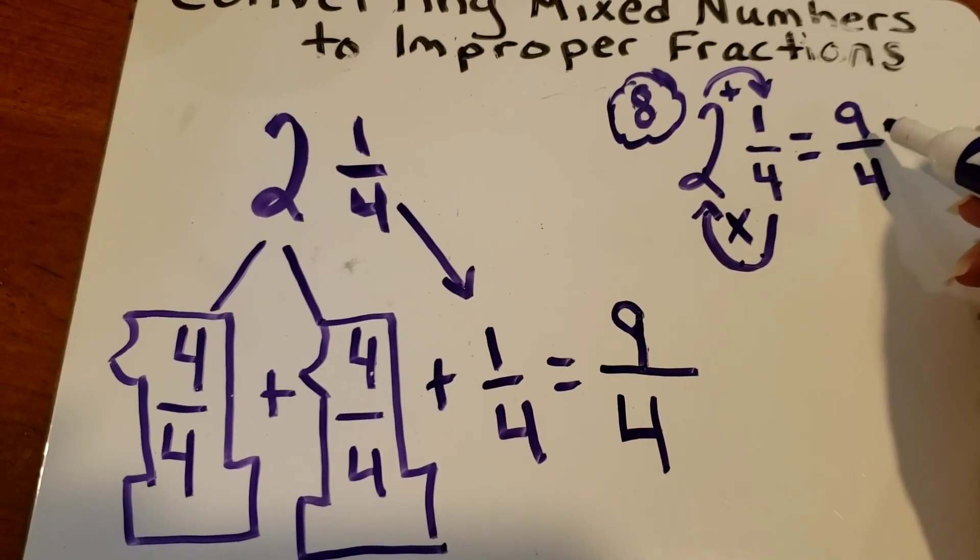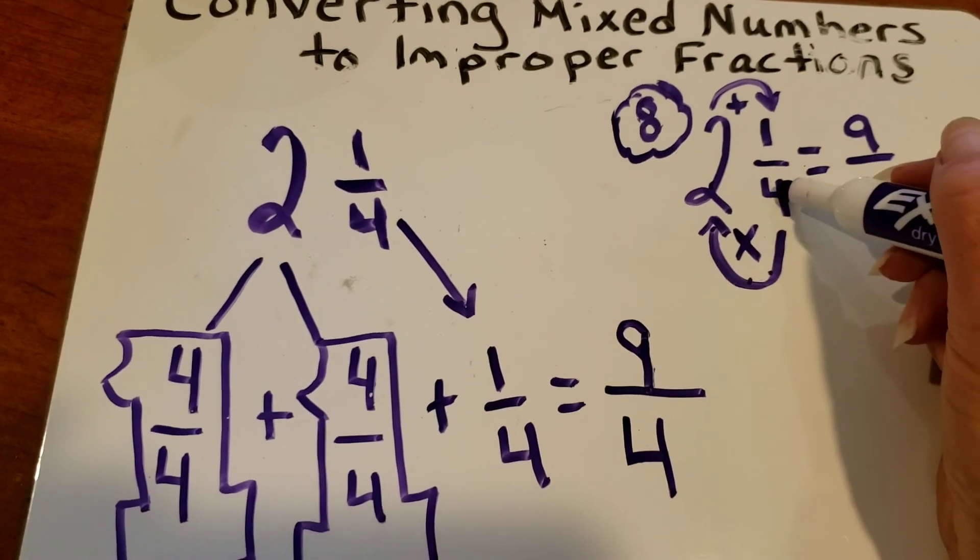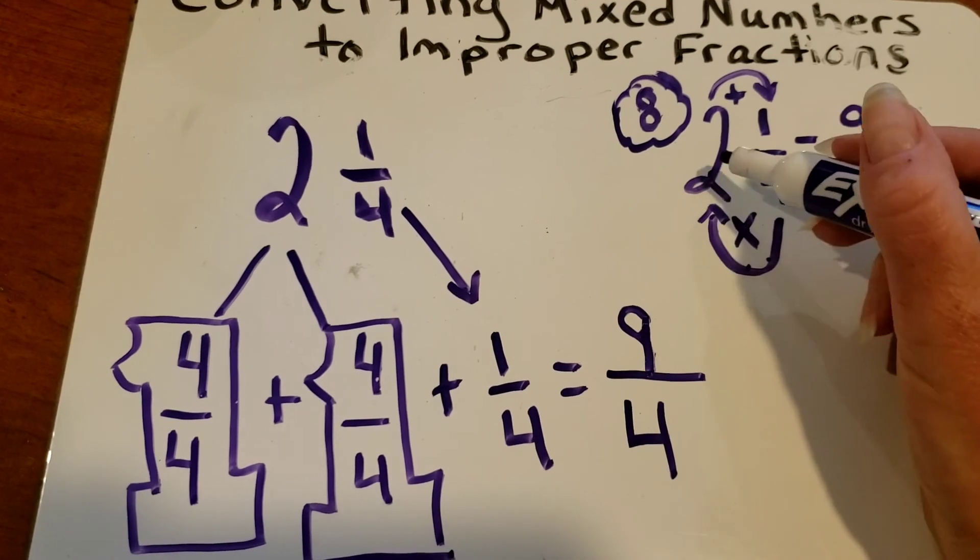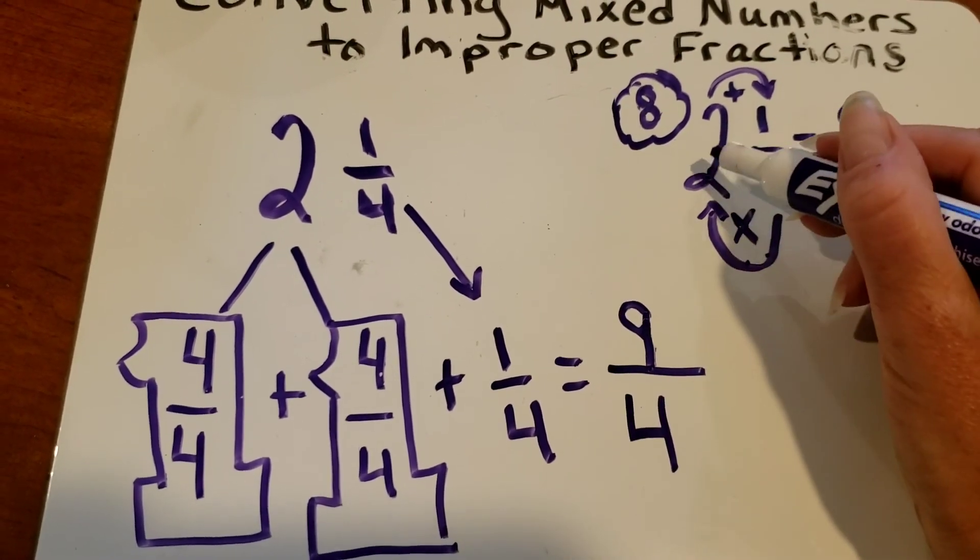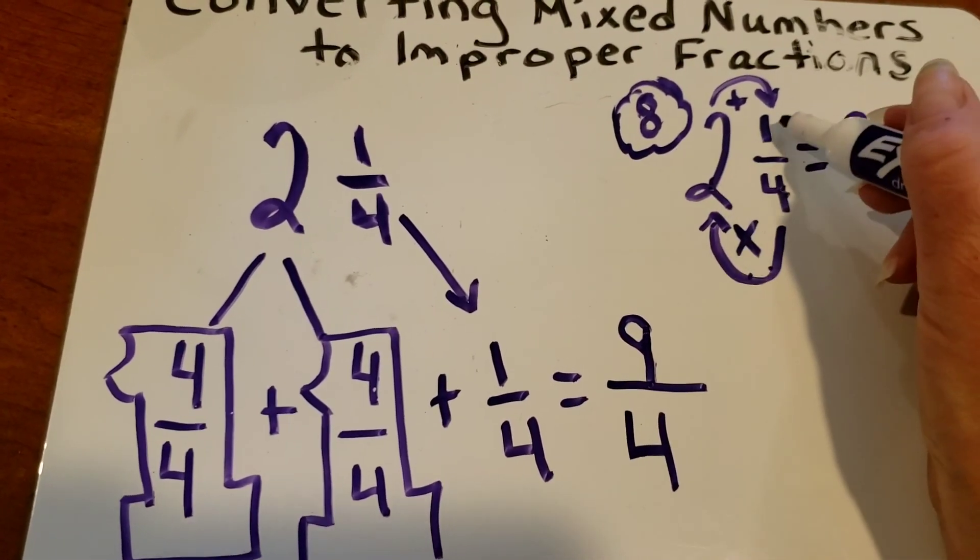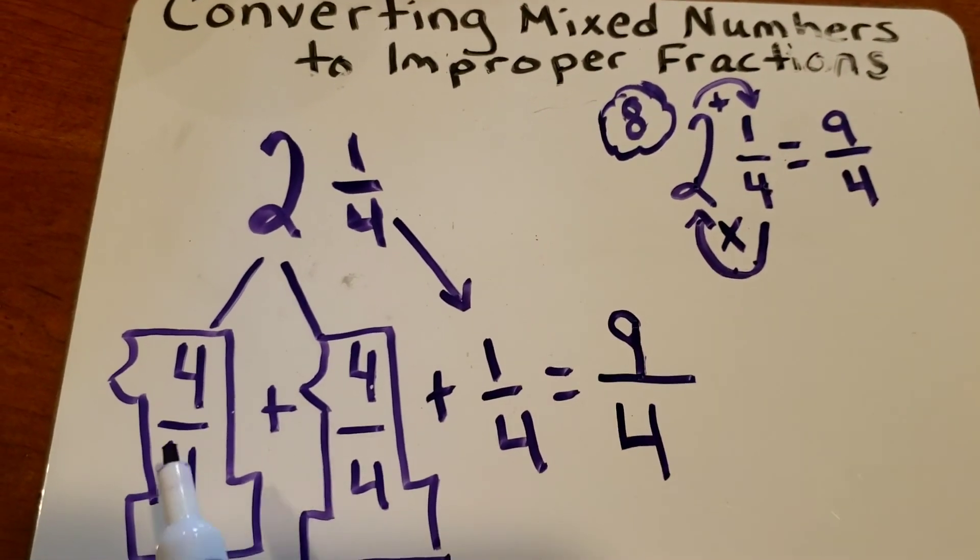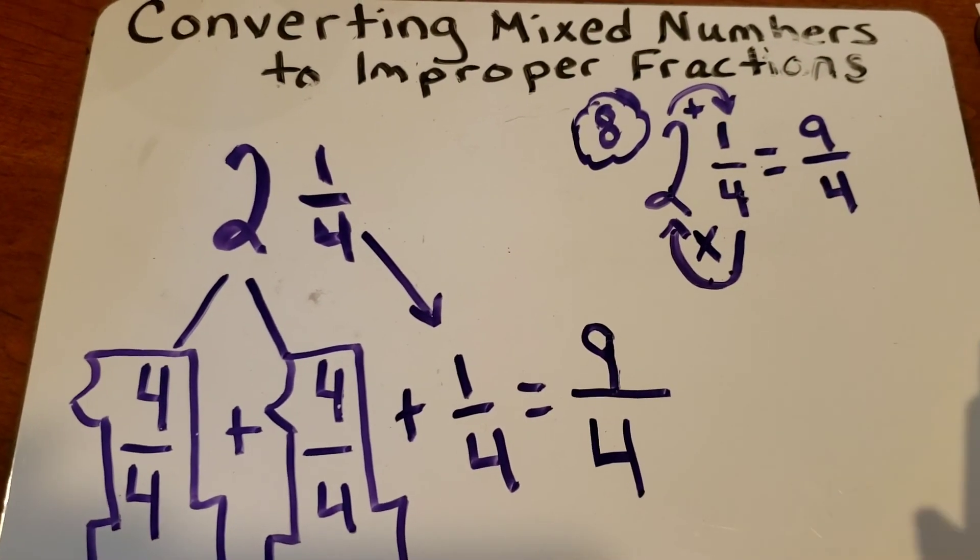So to change a mixed number into an improper fraction, you multiply your denominator times your whole number. Remember, four times two is eight. Then you add your numerator, and that will make that process a little bit quicker than writing out a long addition problem of fractions.